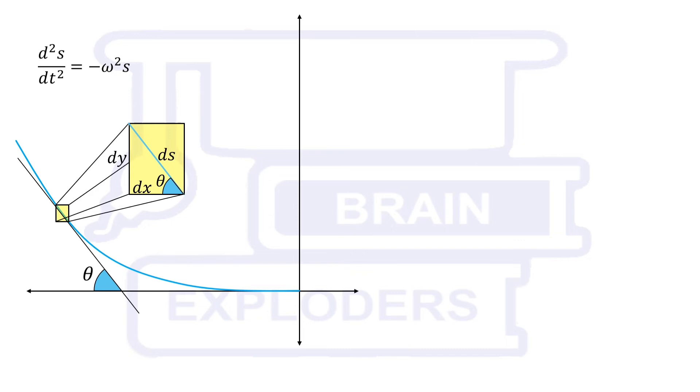d2s by dt square is the acceleration of the object at this point, so we can replace it by minus g sin theta, which we have already discussed in the video.